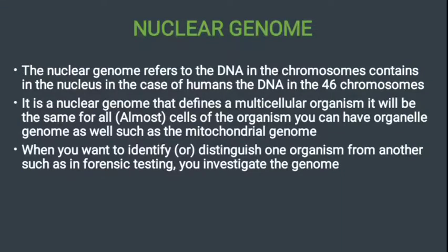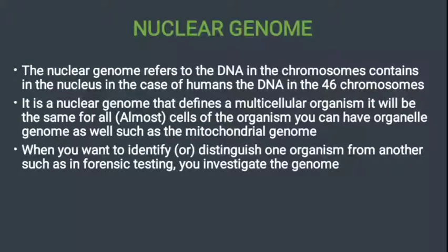Next we see some categories of genomes. The first is the nuclear genome. The nuclear genome refers to the DNA in the chromosomes contained in the nucleus. In humans, the DNA in the 46 chromosomes is the nuclear genome. It defines a multicellular organism and will be the same for all cells of the organism. You can also have organelle genomes, such as the mitochondrial genome. When you want to identify or distinguish one organism from another — such as in forensic testing — you investigate the nuclear genome.